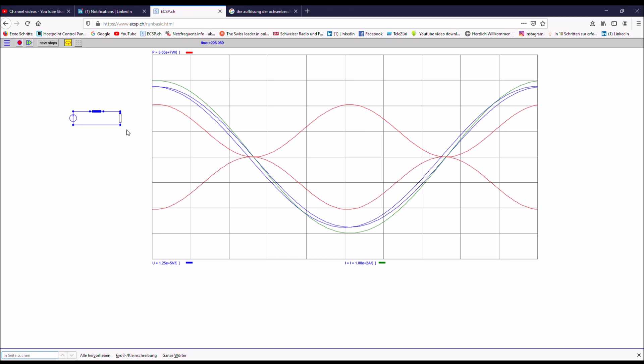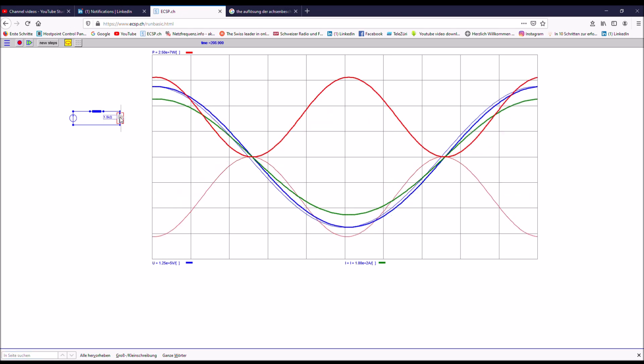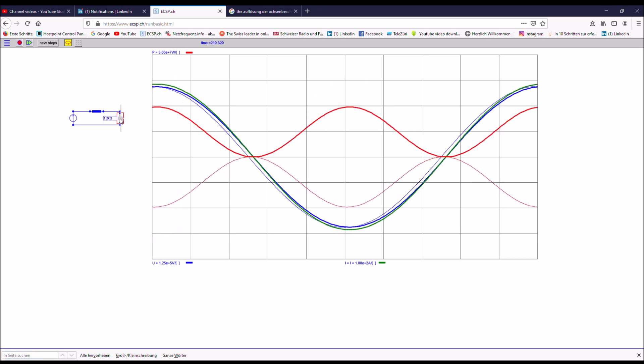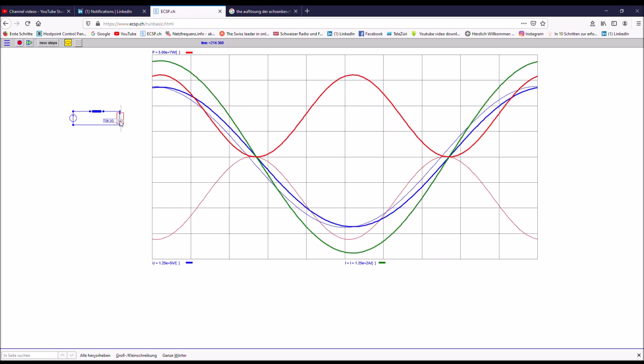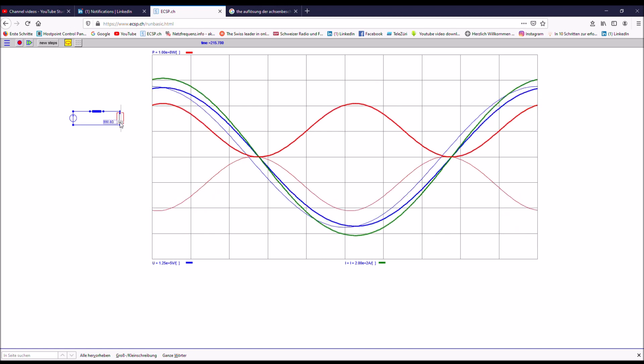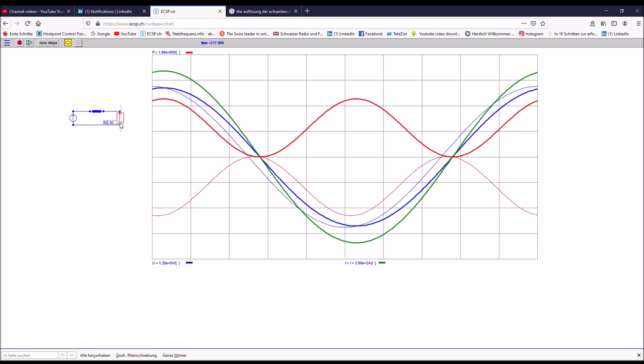I continue to increase the demand by reducing the ohmic resistance. And you see that the power curve is going up. The current is going up. And what you also see now is that there is now a phase angle between the source voltage and the load voltage.